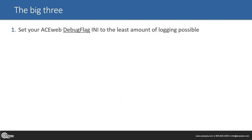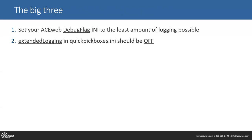So the big three with this — and you've probably heard me or everyone at Aceware talk about something called a debug flag for logging routines. We want to always make sure that's set to the least amount. There's an extended logging item in the Quick Pick INI that we want to make sure is off. And again, test everything — I am going to sound like a broken record the entire time telling you to test things.